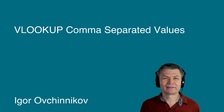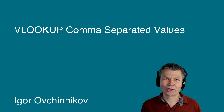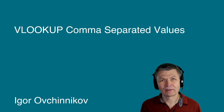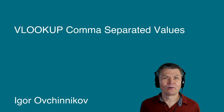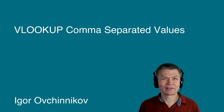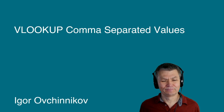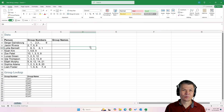Hi, it's time for a little Excel formulas and functions workout. We're going to take a look at how to do a lookup on a list of comma-separated values from a single cell. Let me explain what we want to achieve with this example.